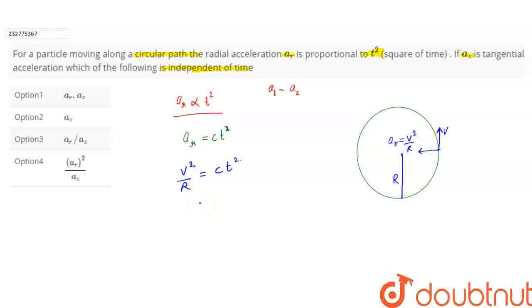From here, what will I get? v square is equals to c into r into t square. So taking square root on both sides, I will get the magnitude of velocity.